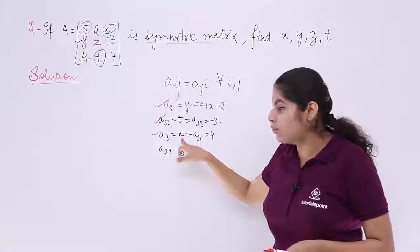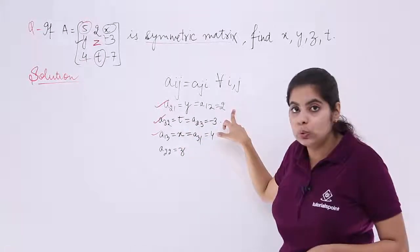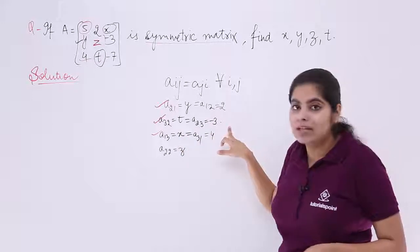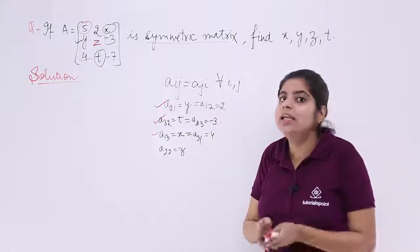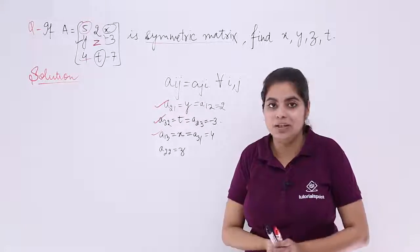So the answers are specifically for x, it is 4, for y, it is 2, for t, it is minus 3 and for z, any value. Any value, no fixed value for z, you can place any value there.